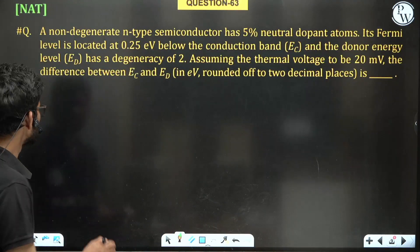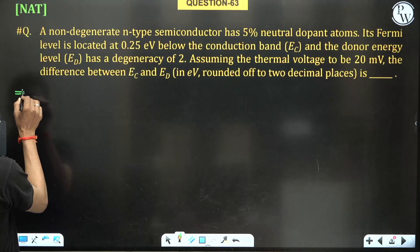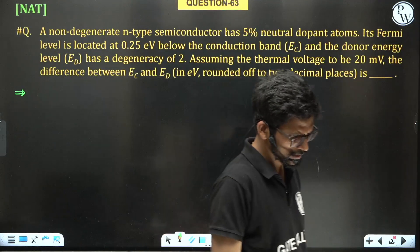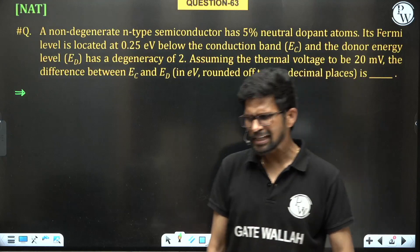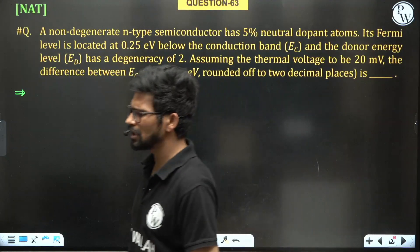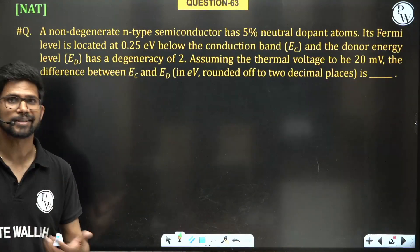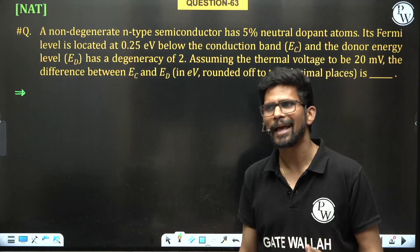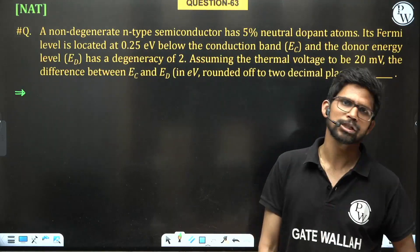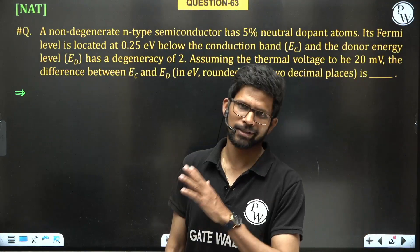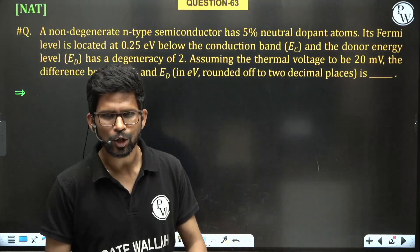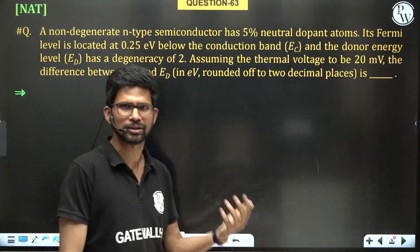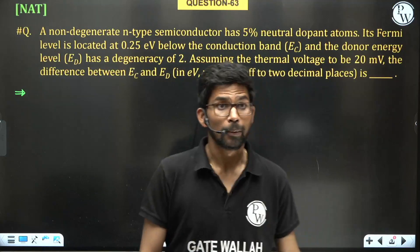Normally, when we understand semiconductors, at room temperature we assume that all donor levels get ionized, and accordingly we analyze the semiconductor and find out the concentration of electrons and holes.